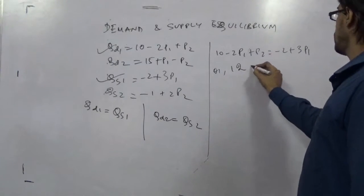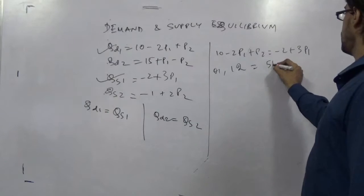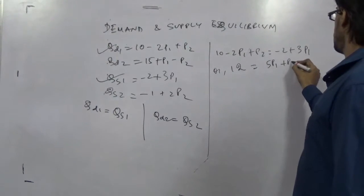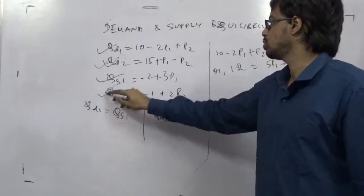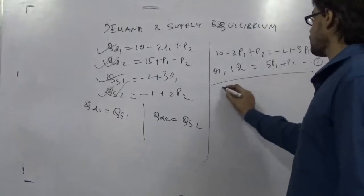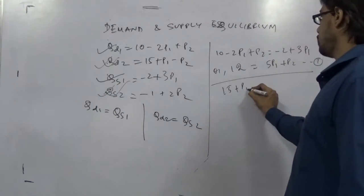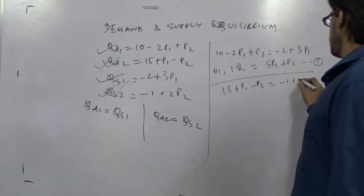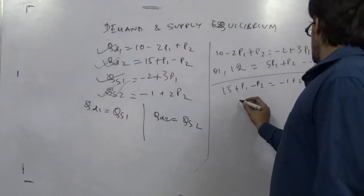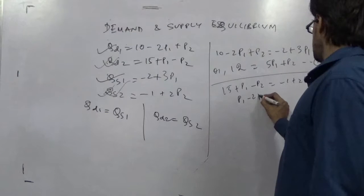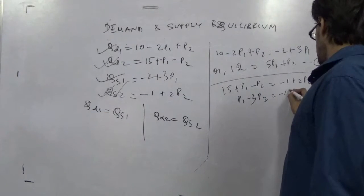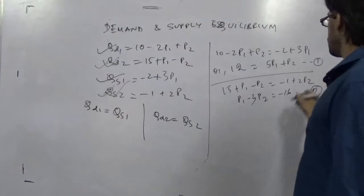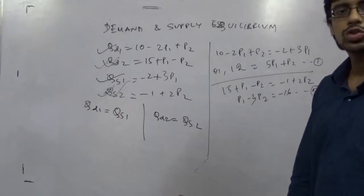That is 10 minus 2p1 plus p2 equals minus 2 plus 3p1. You can do it like 12 and this p will go there, 5p1 minus p2, one equation. And utilizing these two, you can find another: 15 plus p1 minus p2 equals minus 1 plus 2p2. This will give minus p1 plus 3p2 equals minus 16. This is your equation 2.